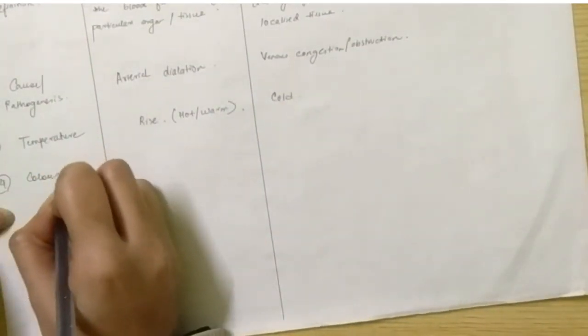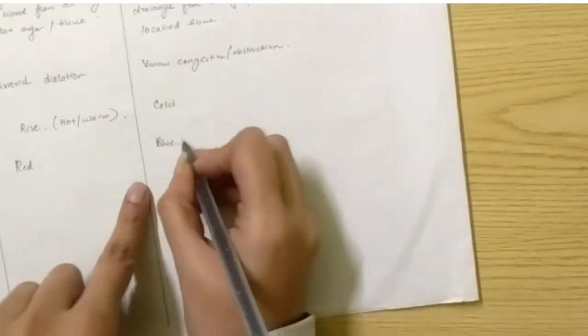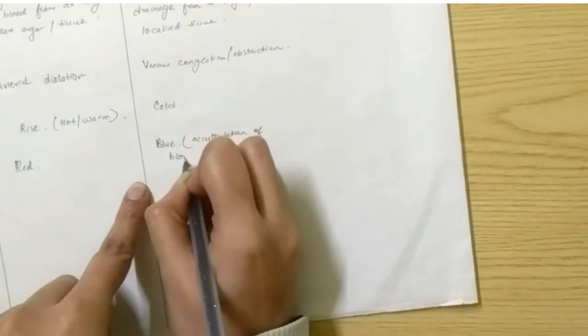Fourth is color. Any organ or tissue having a large amount of blood supply will be red in color. And congestion will lead to bluish in color. That is due to accumulation of blood, because blood is accumulating in that area and not getting drained.